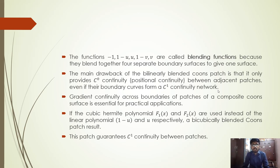C0 continuity means that when two patches share a common boundary curve, they have positional continuity. C1 continuity means they also share the same direction of the tangent at that boundary. In the bilinearly blended Coons patch, only C0 (positional) continuity is achieved. Gradient continuity, or C1 continuity, at the boundaries of a composite Coons surface is essential for practical applications.